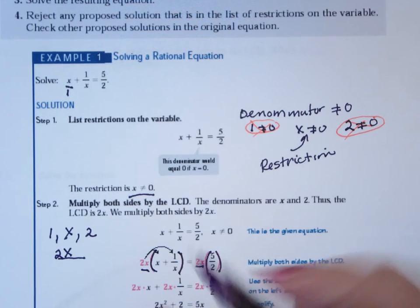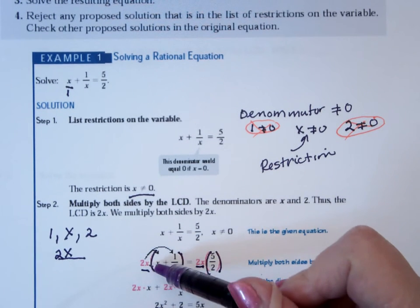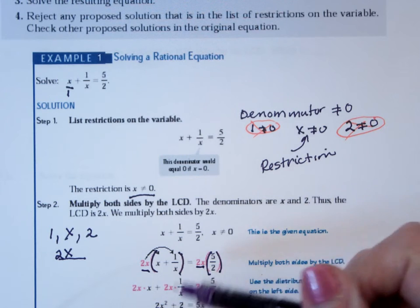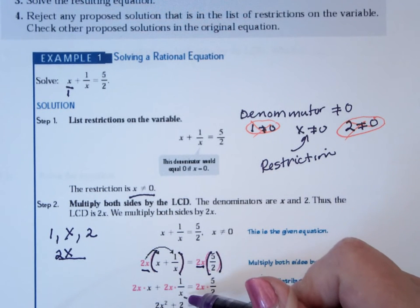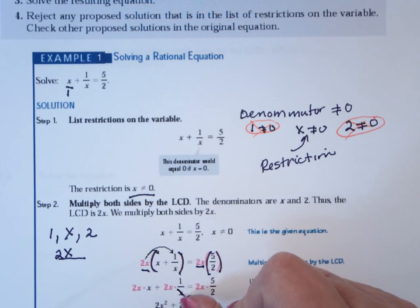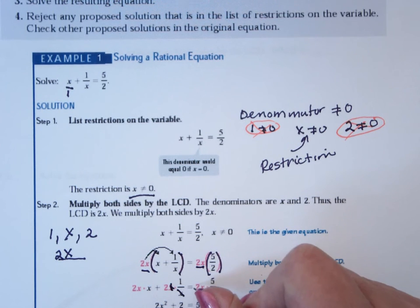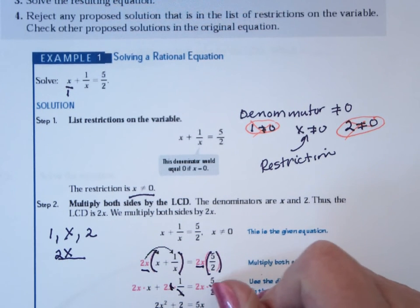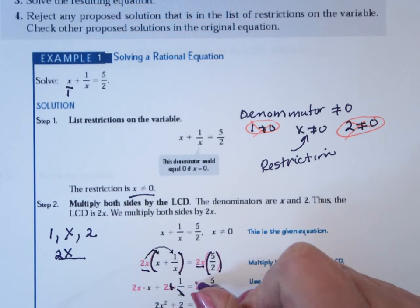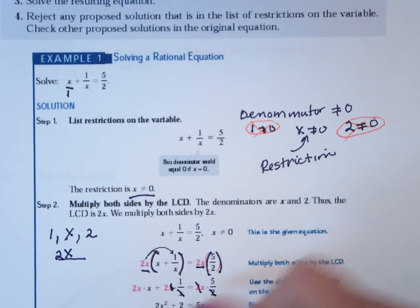In this instance, you're going to have 2x times x, which is going to be 2x squared. You have 2x times 1 over x. The x's reduce out, so that just leaves you with a 2, equals 2x times 5 over 2. The 2's reduce out. That leaves you with 5x. So that's the equation that you need to solve.